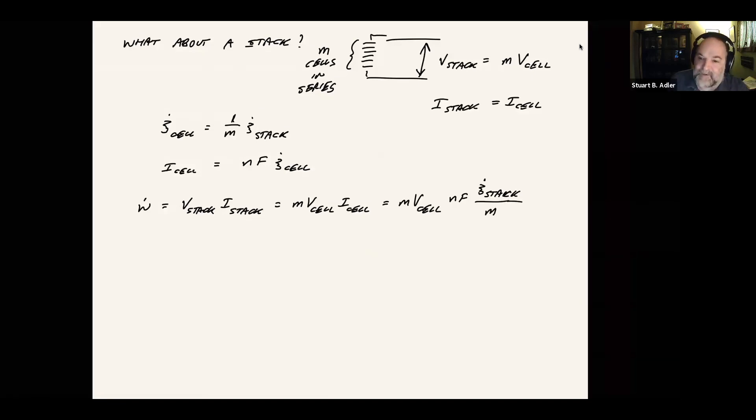And what we can see is the two factors of M cancel. So M cancels M. And we end up with the work rate being NF times V cell times the consumption rate of the stack. Which is an interesting result because it's saying it doesn't matter how many cells we have. If we know V cell and we know how much fuel we're consuming in the stack as a whole, it doesn't matter what the number of cells is. The power is determined by V cell, not by the stack voltage per se.